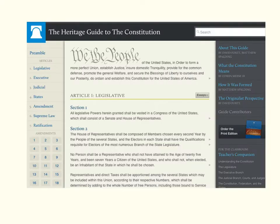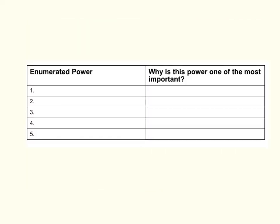You can take a look at these enumerated powers by following the link on the guide in Step 1. That'll take you to the Heritage Guide to the Constitution. If you scroll down to Article 1, Section 8, you'll see a long list of the enumerated powers that Congress has. After you've had a chance to study these, take a few minutes to decide which powers you think are most important, then list your five enumerated powers on the guide in the table provided and include a short explanation of why you think each is important.